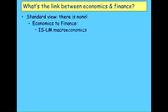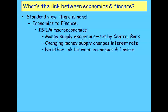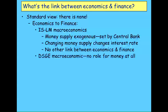If you look at the ISLM stuff you've done in macro, that tells you the money supply is exogenous — it's set by the central bank. That's why when you derive the LM curve in the ISLM model, you've got a vertical money supply, saying it's not under the influence of the market; the government sets it. Changing the money supply changes the interest rate, but there's no other link between economics and finance in that macro model. The DSGE model is even more extreme — they've got no role for money whatsoever.